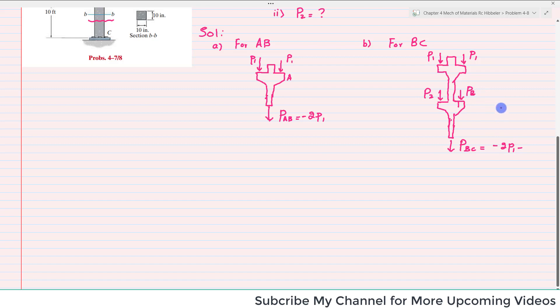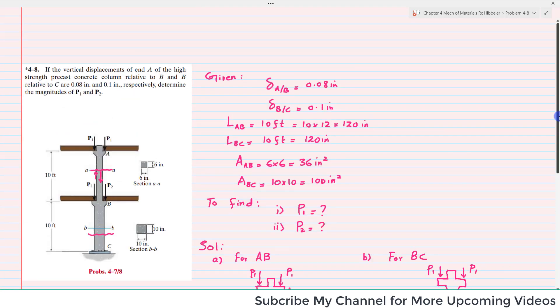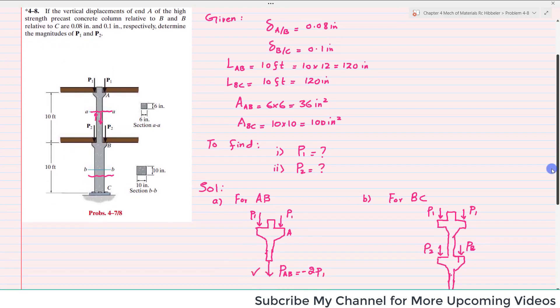The load here was given as P2 and this load is PBC. This PBC is equal to minus 2 times P1 minus P2 and P2, minus 2 times P2. If you take minus as common, it will be equal to minus 2P1 plus 2P2. This is equal to PBC. Now we have PBC and PAB, we can find the rest of things.